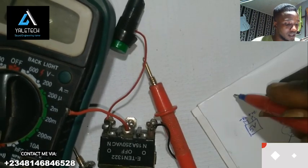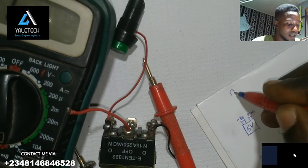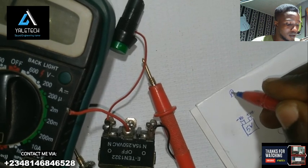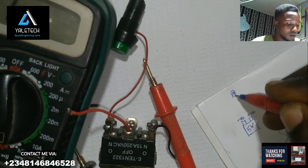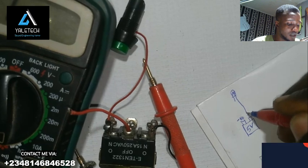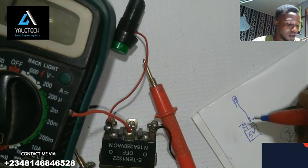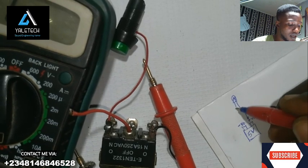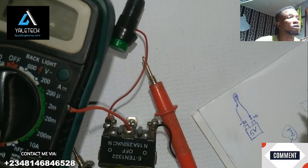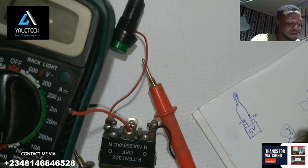Now let's say we have a bulb here — an LED bulb. Let's assume we have an LED bulb. So if my positive is here, my negative will come here. So directly, now if you look at this system.